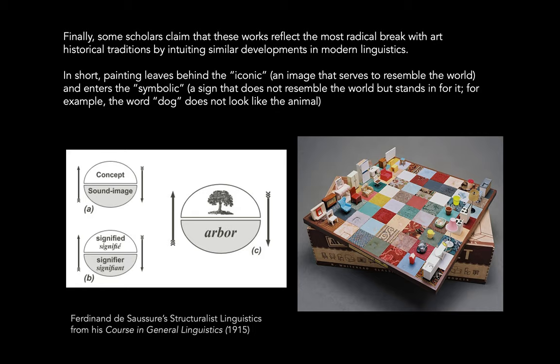If overnight everyone decided that 'dog' represents that feline creature and 'cat' represents that canine creature, it would work. Everybody would be using and flipping it, and slowly over time the meaning of the word would change. De Saussure says that the connection is arbitrary — there's no necessary connection between 'tree' and the thing tree, or 'cat' and the creature cat.